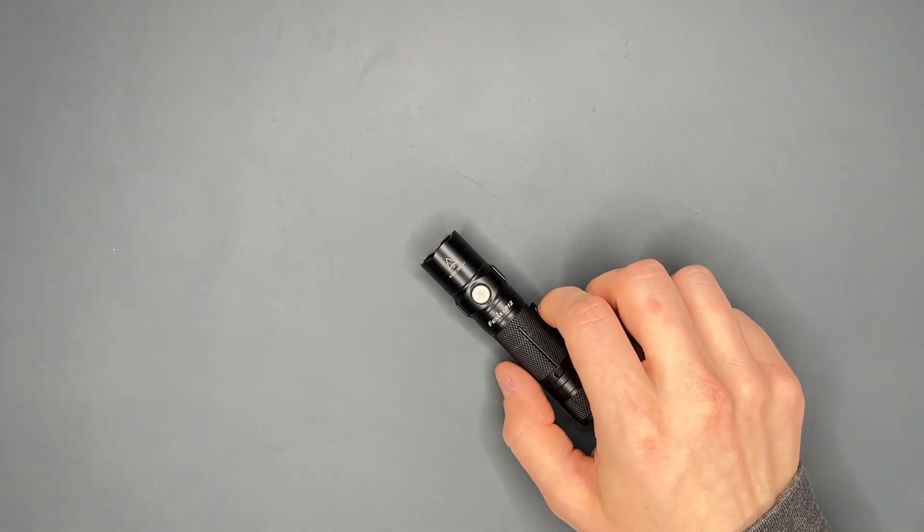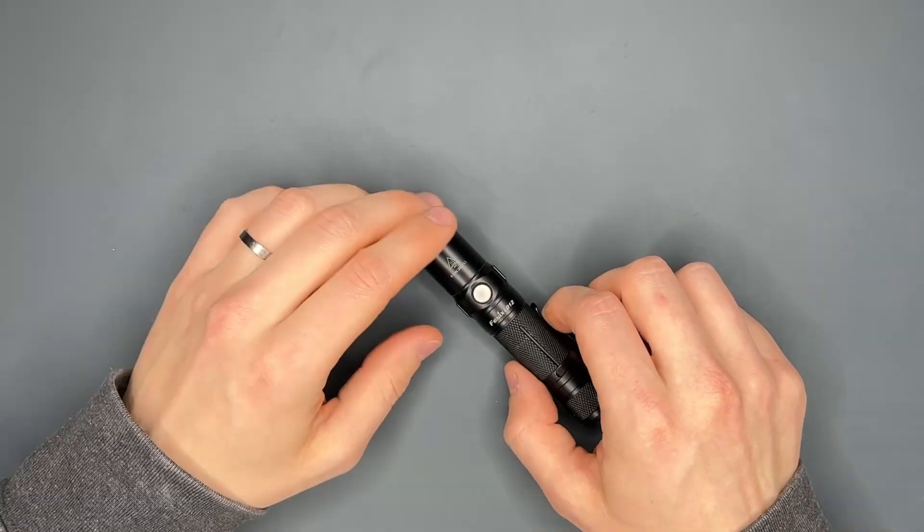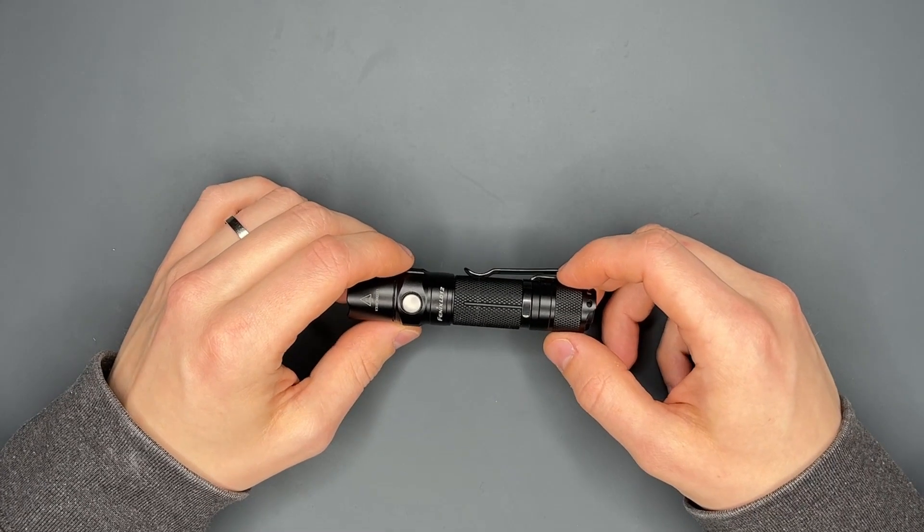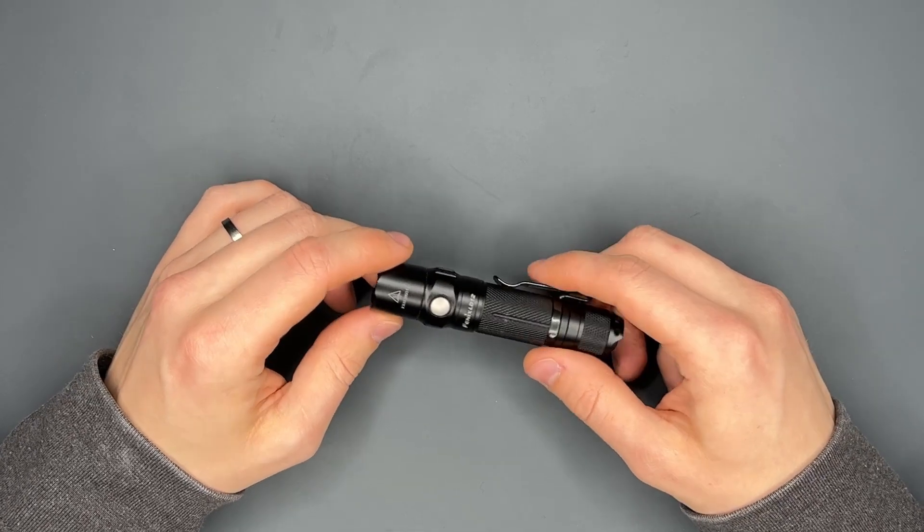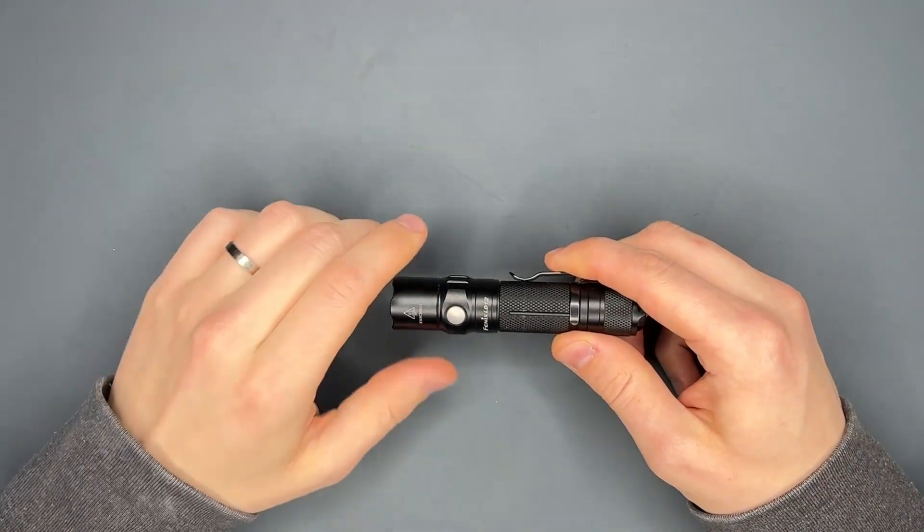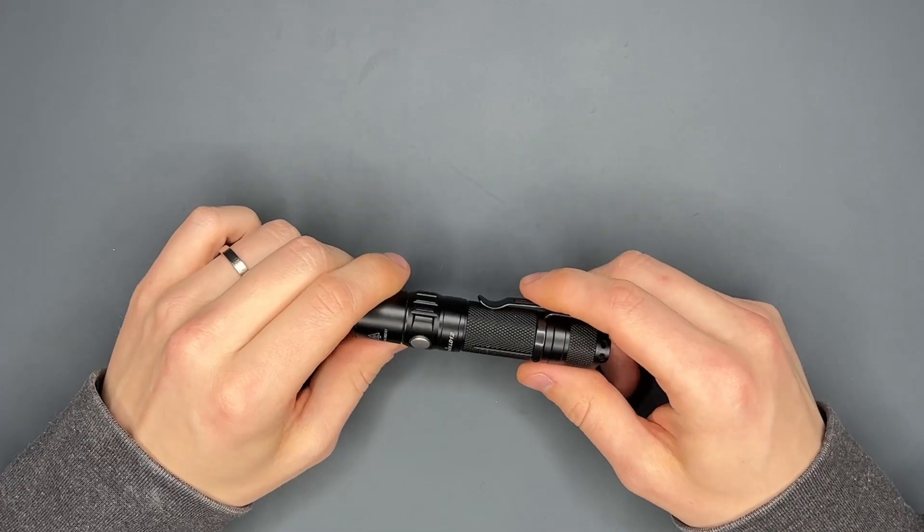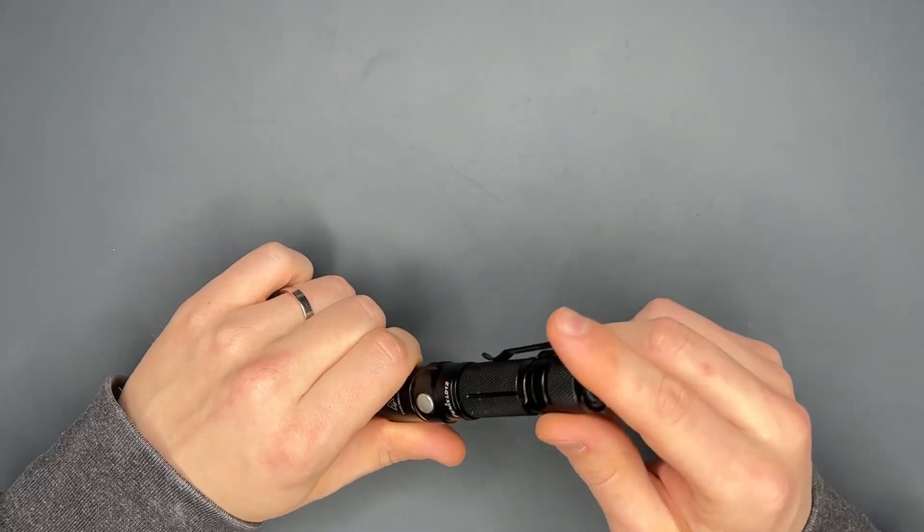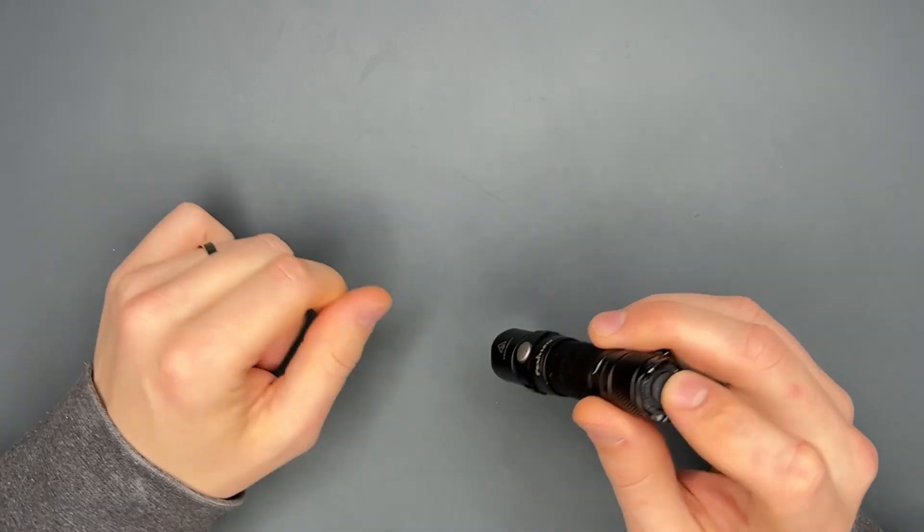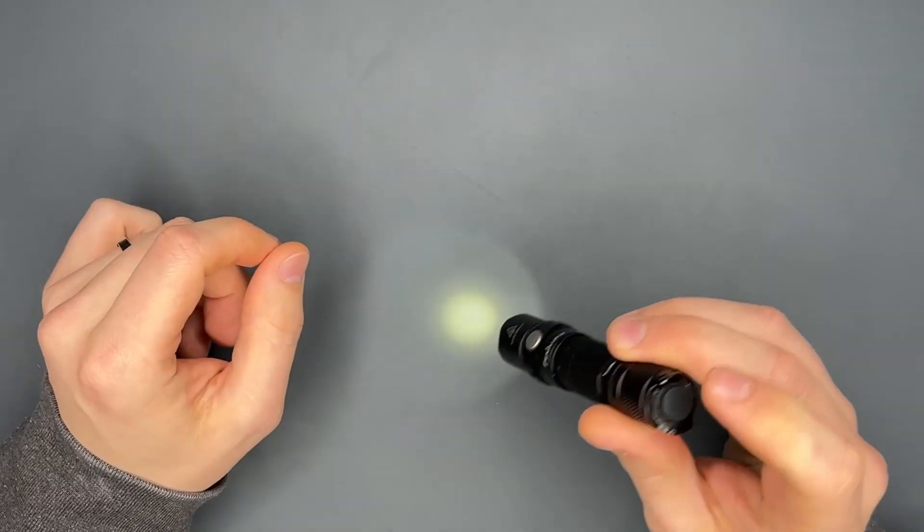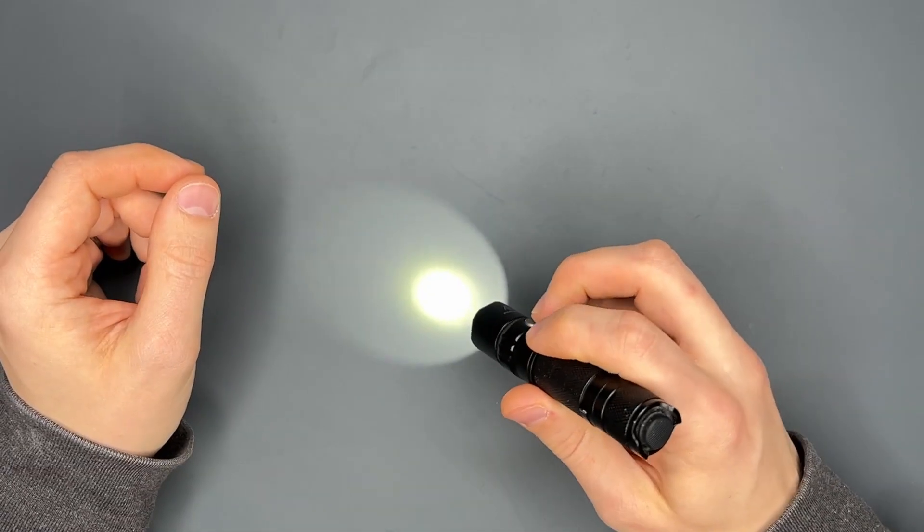Okay, today we talk about the Fenix LD12 2017 edition. I've had this light for quite some time and I have a couple of thoughts on it which I wanted to share, and one of them is particularly interesting to me. This light has two switches: one tail switch to turn it on and off, and one mode selector to select the different lumen outputs.